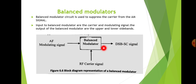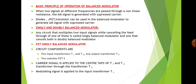Only the upper and lower sidebands will be present in the signal. This is the block diagram representation of the balanced modulator. The basic principle of operation is that when two signals at different frequencies are passed through a non-linear resistance, then the AM signal is generated with suppressed carrier. Usually, diodes, junction field-effect transistor (JFET), and transistors such as BJTs can be used in the balanced modulator.